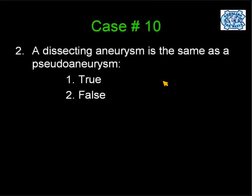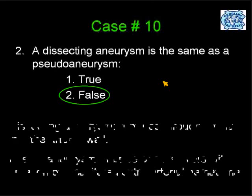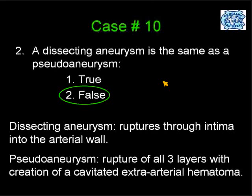The last question in this case: is a dissecting aneurysm the same as a pseudoaneurysm — true or false? The correct answer is false — eighty percent of you are correct. A dissecting aneurysm ruptures through the intima and the clot is within the arterial wall. In a pseudoaneurysm, there is rupture of all three layers of the arterial wall and creation of a cavitated extra-axial hematoma. That's why these patients need to be treated, because they tend to rupture again and produce catastrophic hemorrhages.